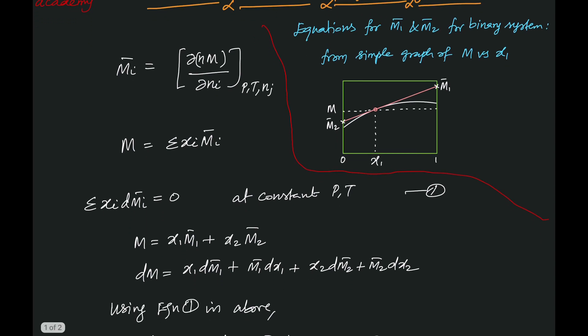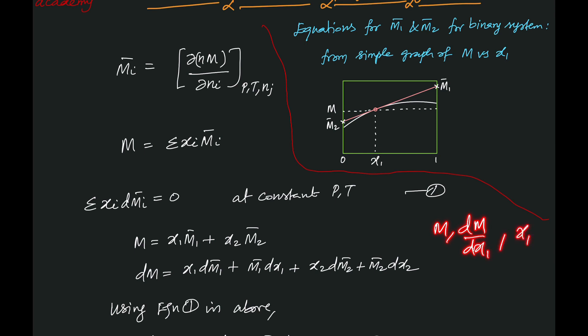We are considering only two components, namely components 1 and 2, with mole fractions x₁ and x₂. For the binary system, we write m = x₁m̄₁ + x₂m̄₂. The final expressions will have m, its derivative dm/dx₁, or some composition terms — we want these expressions in terms of these variables.